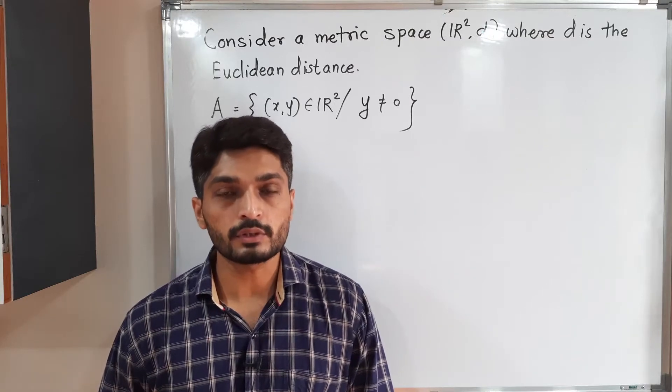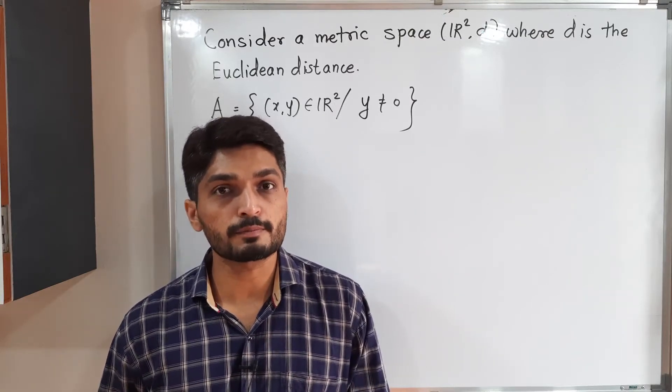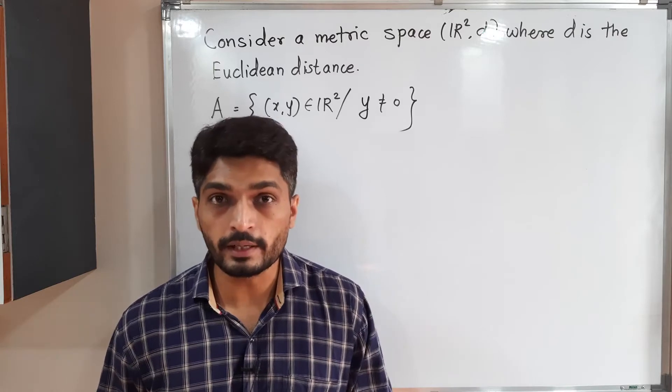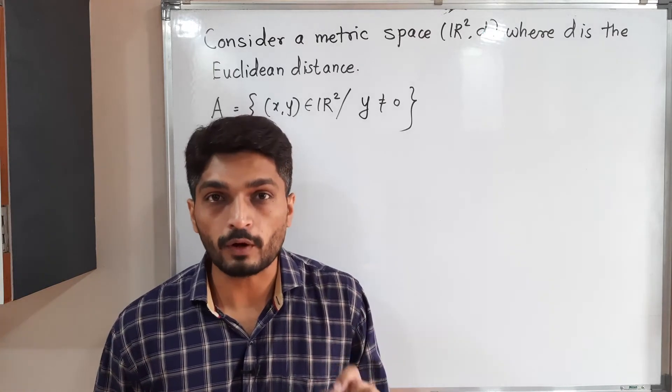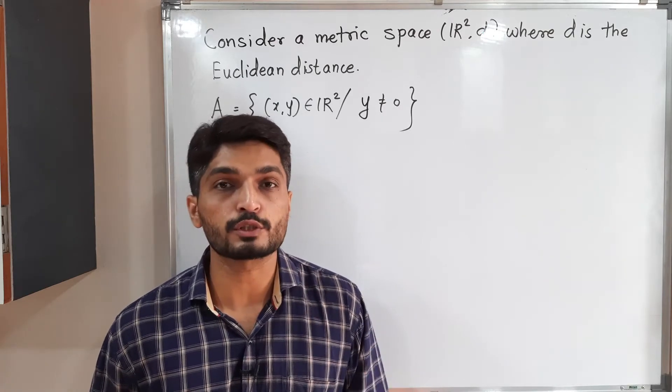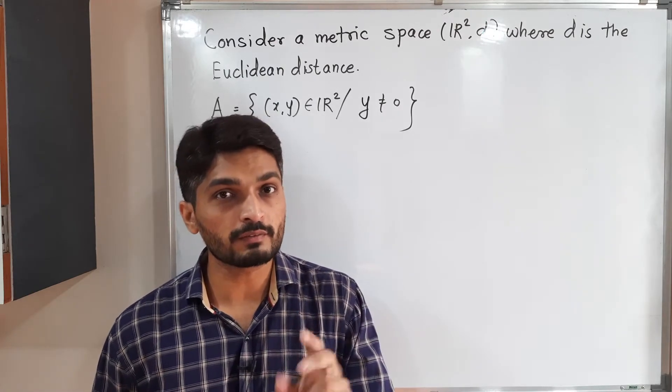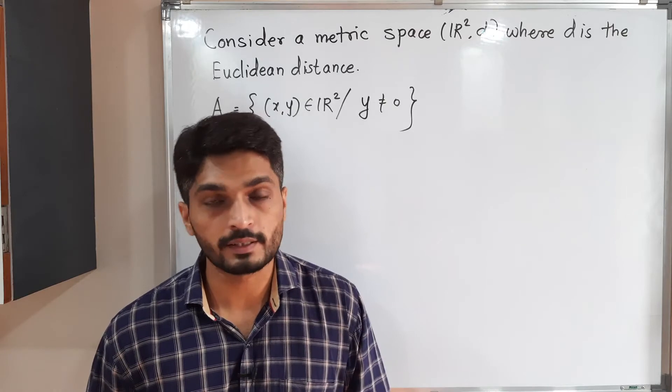Let us discuss this example. In this example, we have a metric space R² where d is the Euclidean distance, defined as d(x,y) equals square root of (x₁ minus y₁)² plus (x₂ minus y₂)². If (x₁, y₁) and (x₂, y₂) are two points.